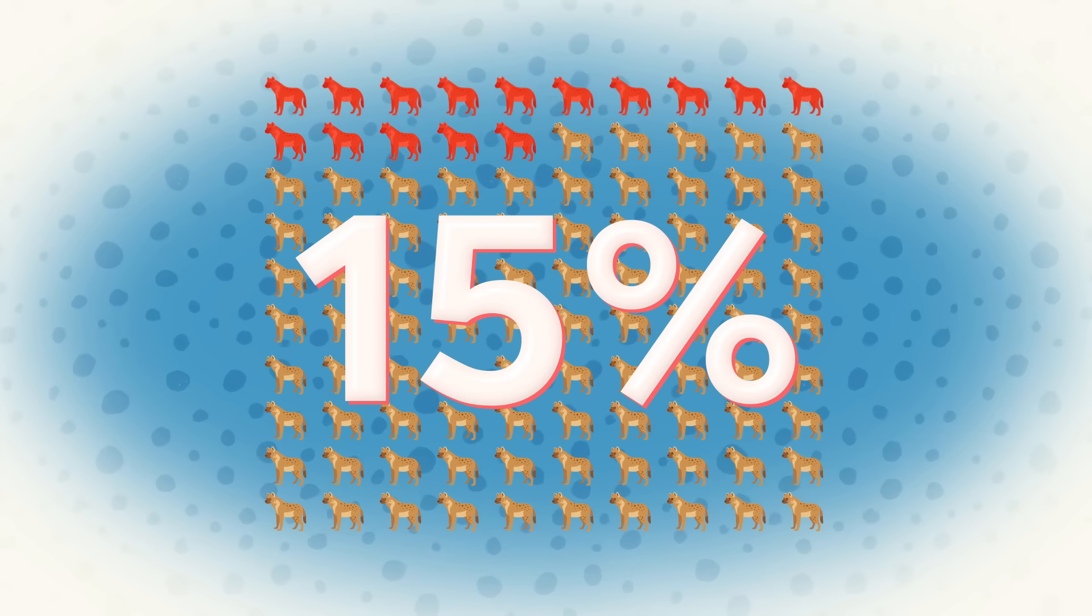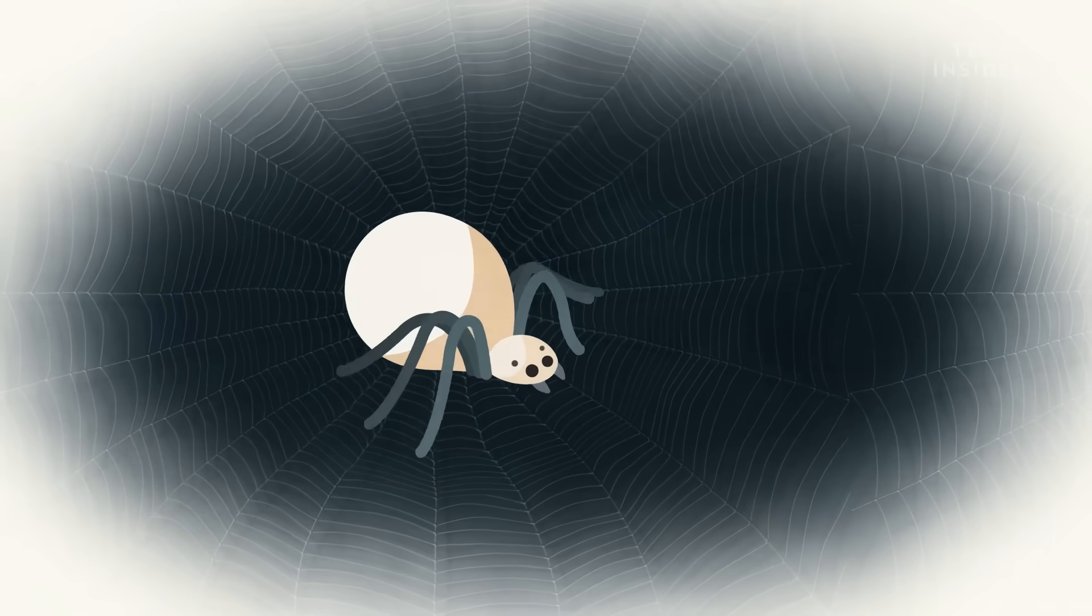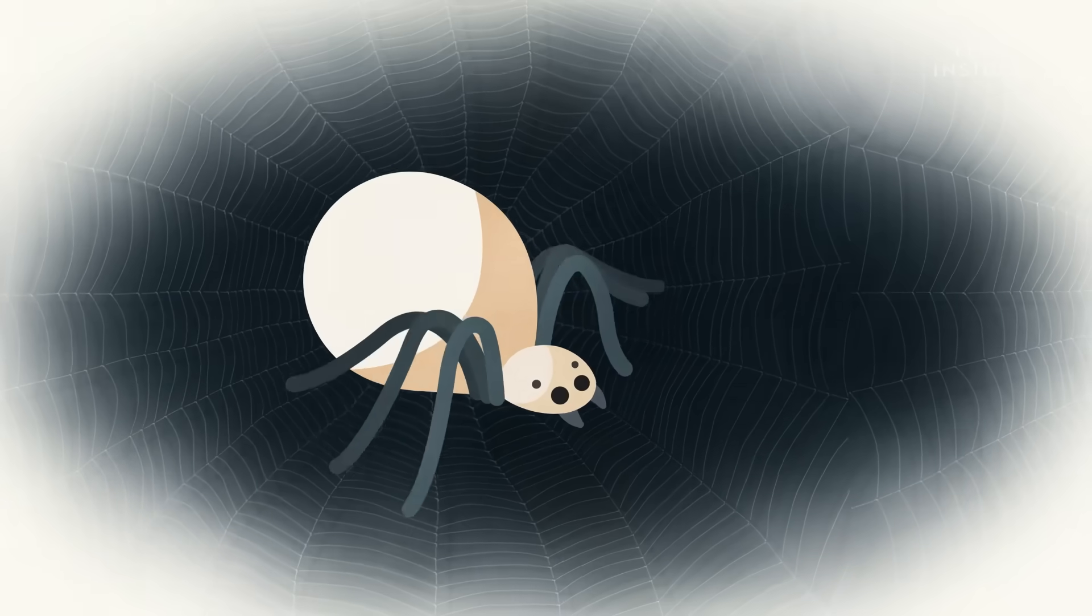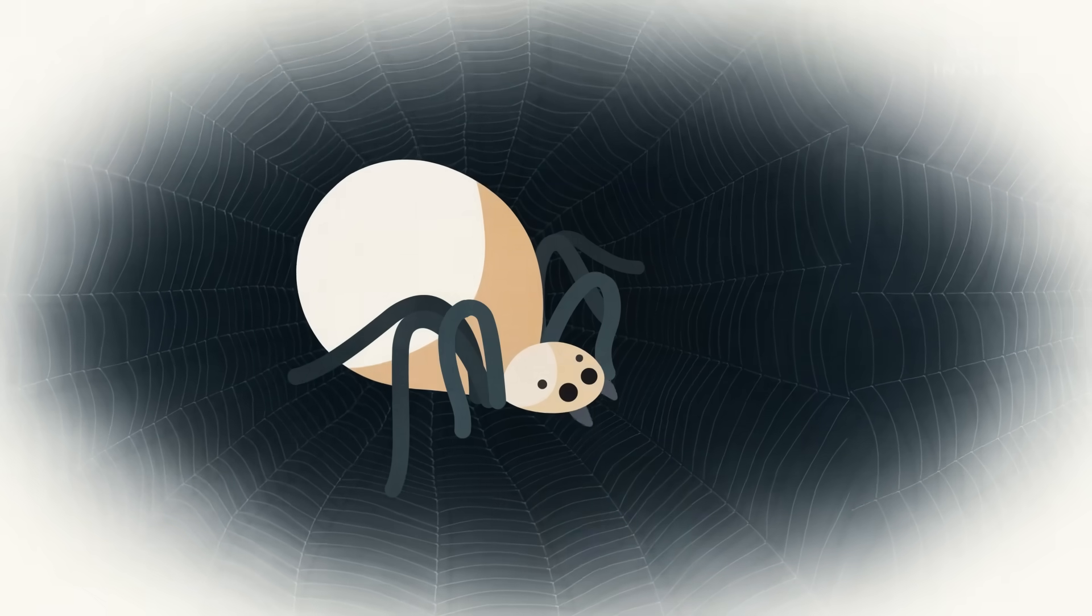But believe it or not, a species of velvet spider has it even worse. You know how some animals chew up food for their babies? Well, Stegodyphus lineatus takes this to a whole new level.